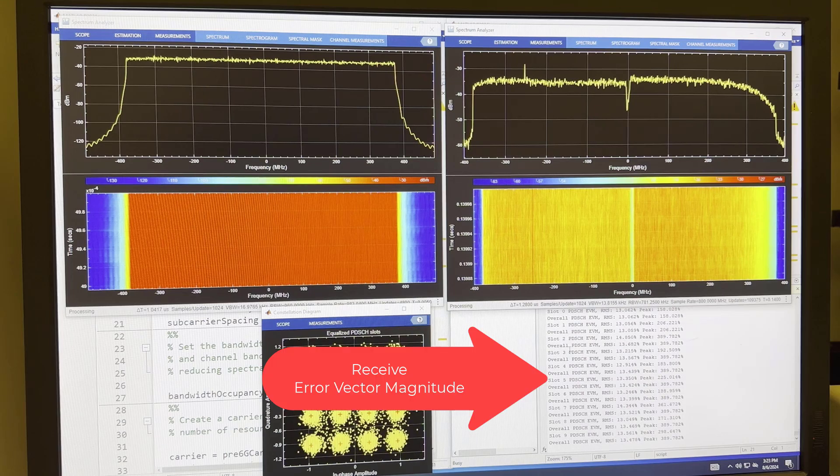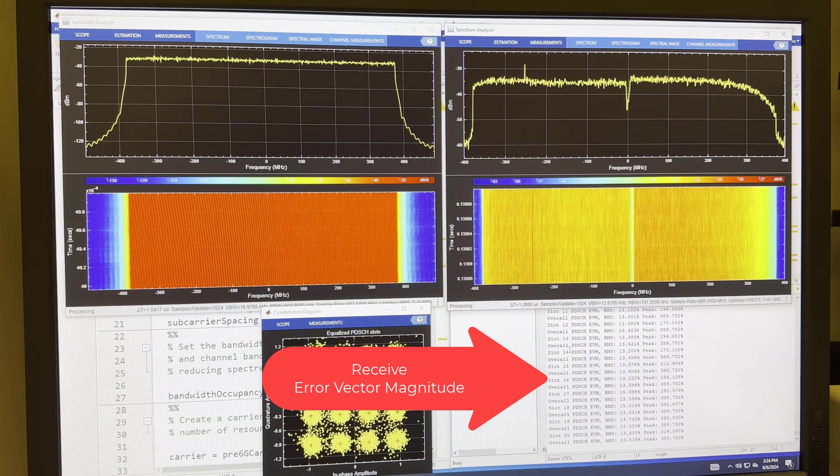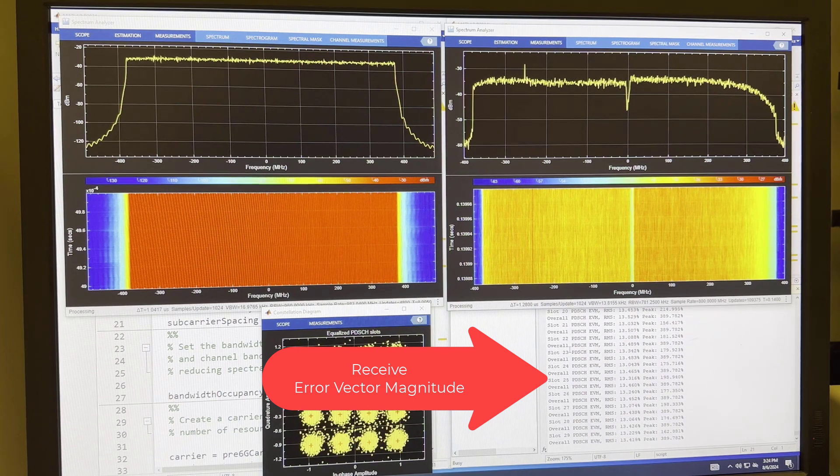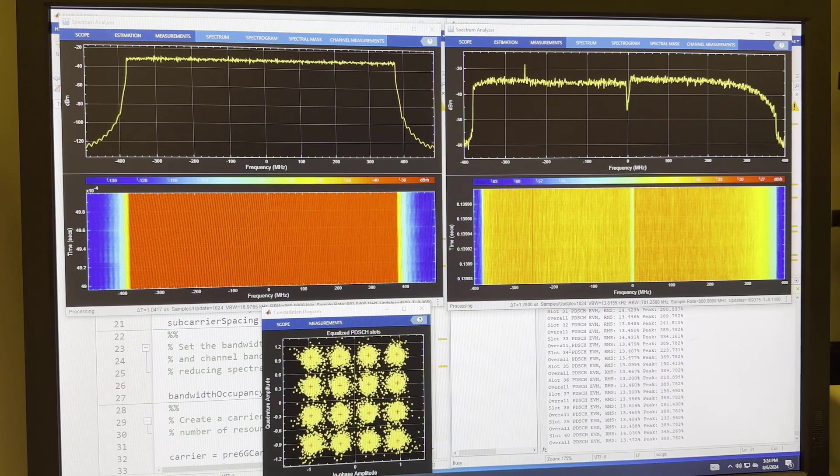If you look at the lower right hand side on the command window with the scrolling, you can see that the RMS EVM is roughly 13 or so percent, which is not bad. But we look forward to hacking away more at this example demo and making it even better.